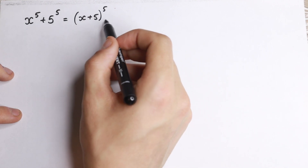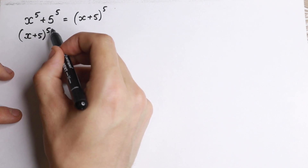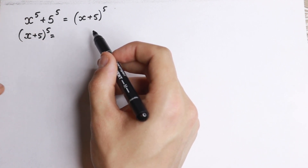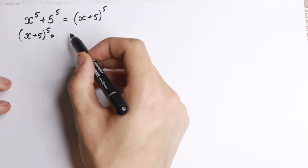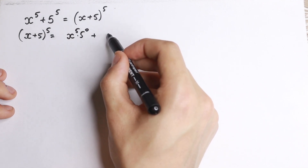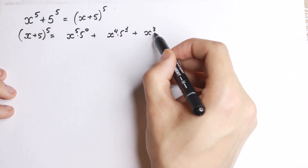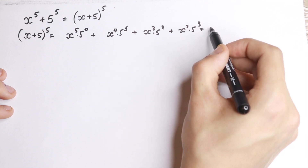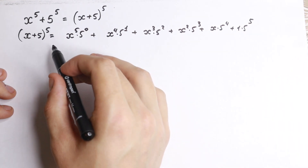First of all we have a really interesting expression on the right hand side. We have x plus 5 to the fifth power and we really need to expand this to the fifth power because we need to simplify it step by step, and this raising to the fifth power is not in a useful form for us yet. We all know this is Pascal's triangle, so I write it as x to the fifth times 5 to the zero, plus x to the fourth times 5 to the first power, plus x cubed times 5 squared, plus x squared times 5 cubed, plus x times 5 to the fourth power, and plus 1 times 5 to the fifth power.